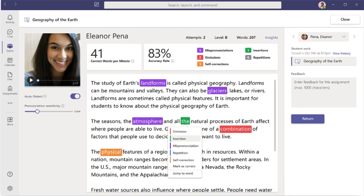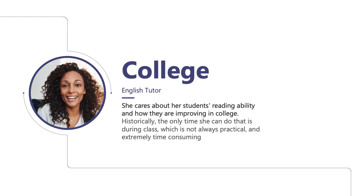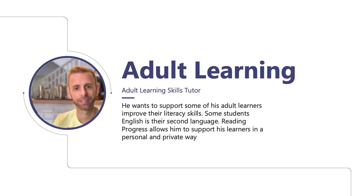Let's have a look at the fantastic Reading Progress function in Teams, a new feature that allows you to check the reading fluency of your students. A primary school teacher could use this to provide individual support as learners practice and develop their reading skills. College tutors can use Reading Progress when it's not practical to assess reading ability in a session, and adult learning tutors can use it to support students whose English may not be their first language, in a personal and private way.